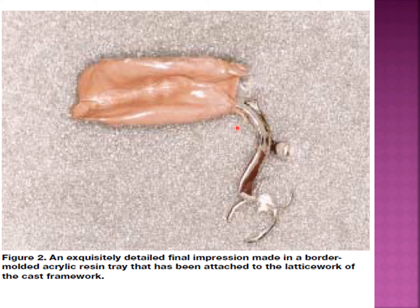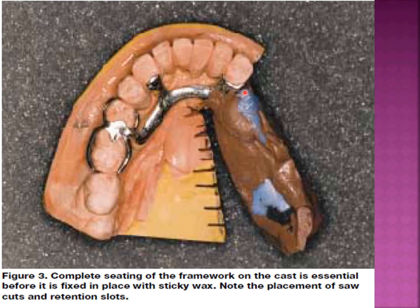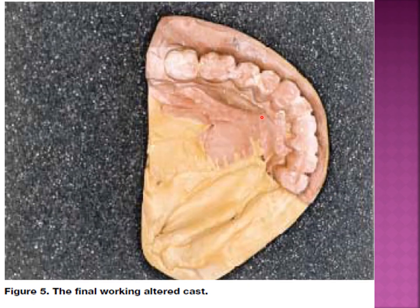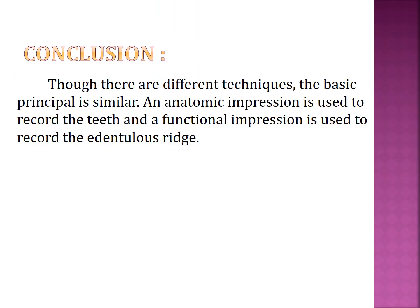Here we can see an example of a distal extension case. A detailed final impression is made and border-molded in a border-molding tray adapted to the framework. After this, indents are created in the model for complete seating of the framework on the cast. The framework is fixed in place with sticky wax. Saw cuts and retentive slots are placed, and then the cast is beaded, boxed, and poured — ideally in a different color of dental stone so you can see the difference. This produces the final working altered cast.